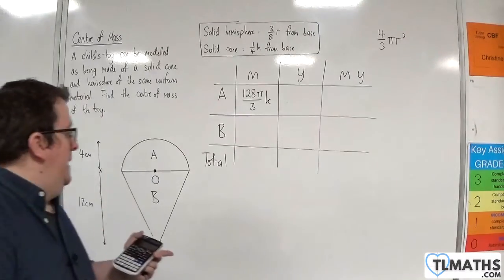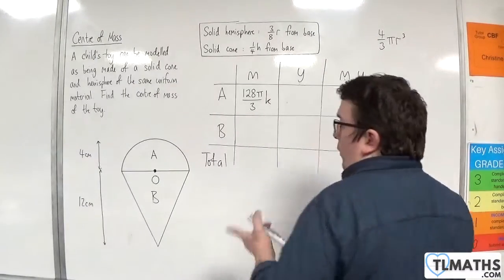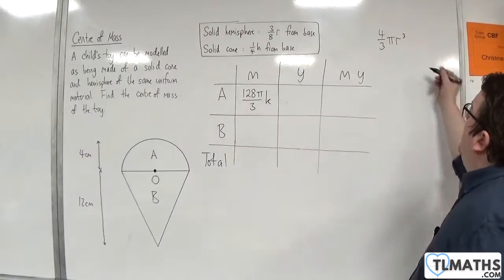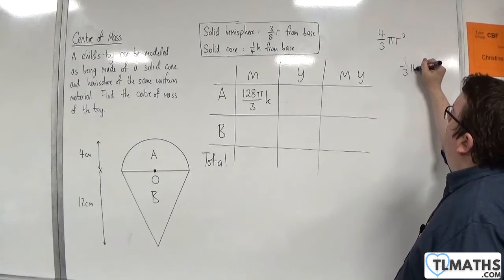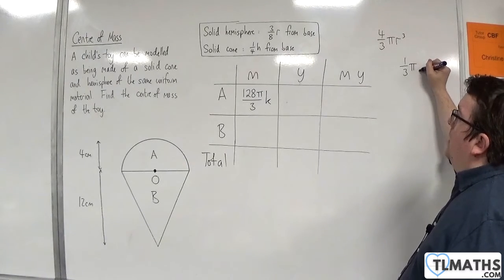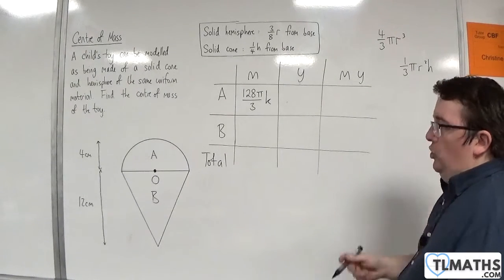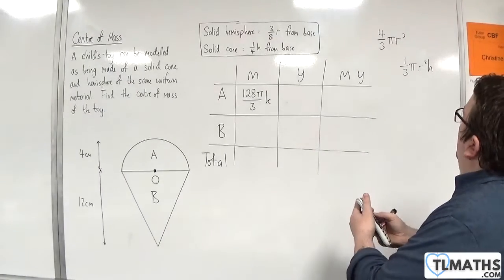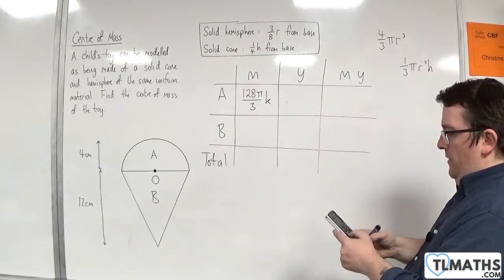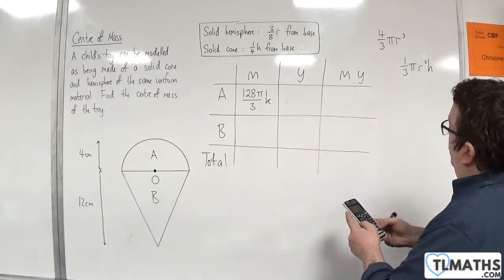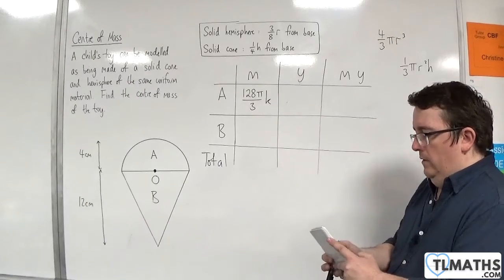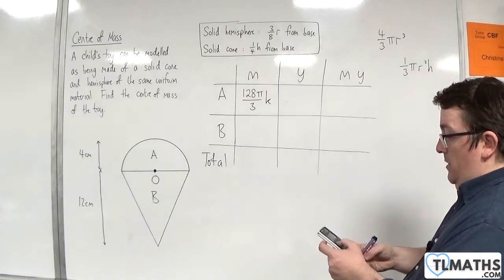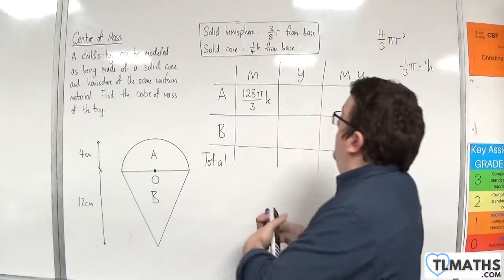Now, as for B, the volume of a cone is 1 third pi R squared H. So we have 1 third times by 4 squared times by 12 times by pi, and that's 64 pi.